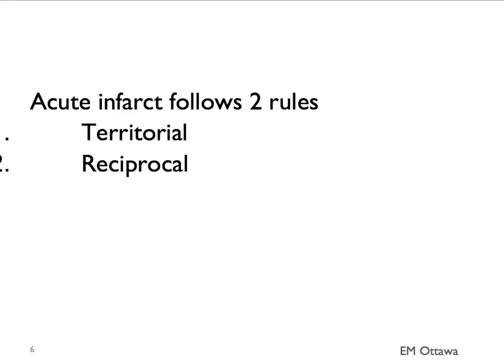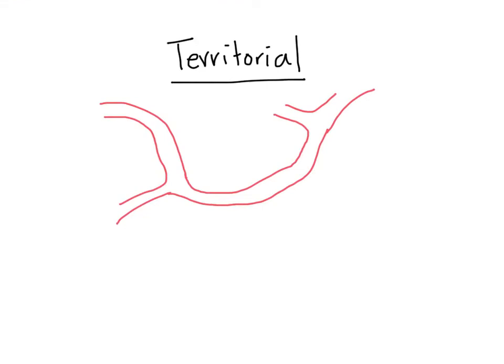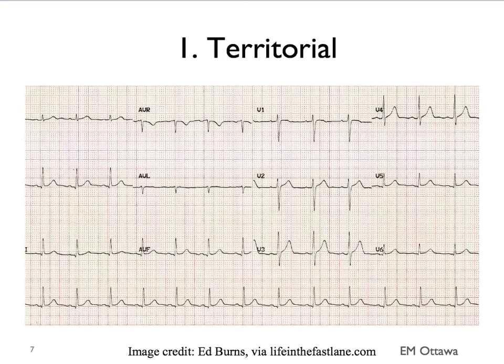Acute myocardial infarct follows two rules on the ECG. First, it's territorial. Second, there are reciprocal changes. We'll go through them one by one. Starting with territorial: each coronary artery and its branches supply a specific area of the heart. If one of the arteries or the branches is blocked, it will make sense that all the territory of the heart being supplied by this branch will not be getting oxygen — the whole territory is affected. So when we're looking at ST elevation, we want to look at them in territories.